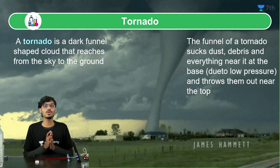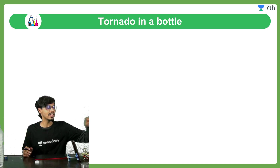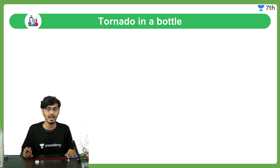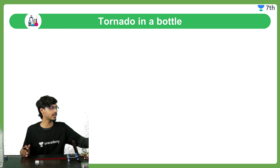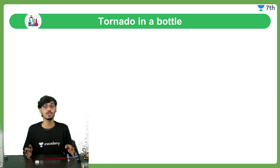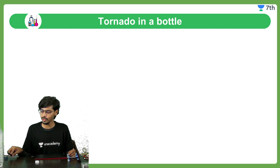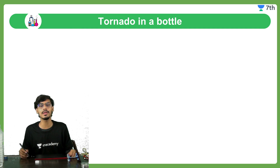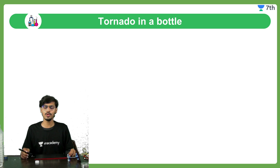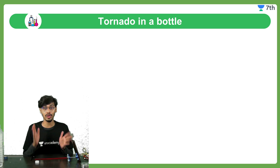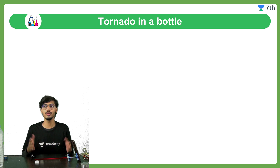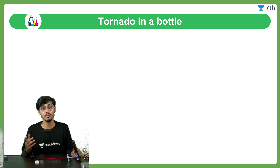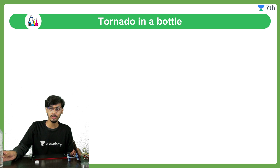Today we are going to try to replicate the tornado in a controlled environment, right on this table, and it's not going to be harmful — it's just going to be a lot of fun. I hope you would be able to replicate this and make it at home as well. This tornado is not going to be made in air; we are going to make it with the help of water. Do you know what a whirlpool is? A whirlpool is just like a tornado but in water. So we are going to make a tornado in a bottle using water.